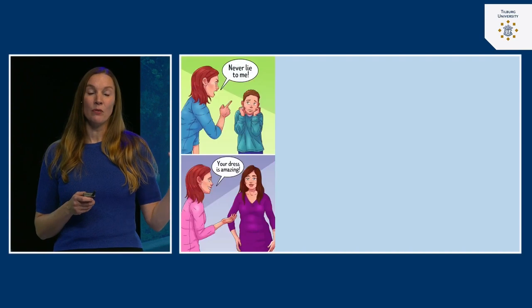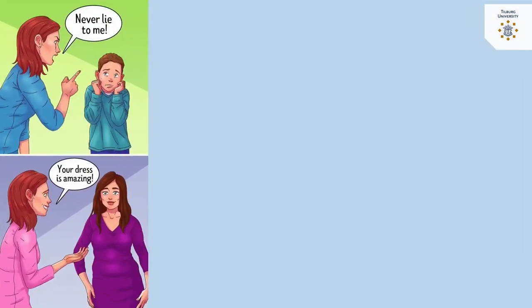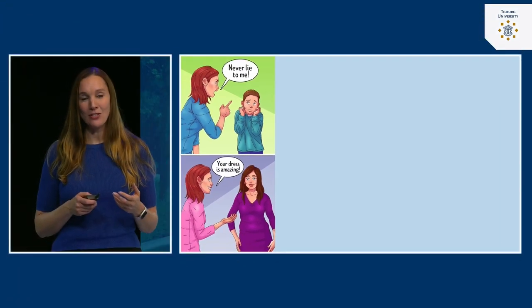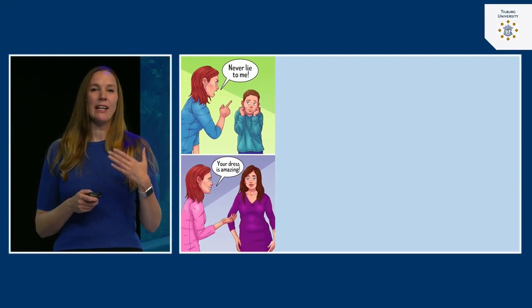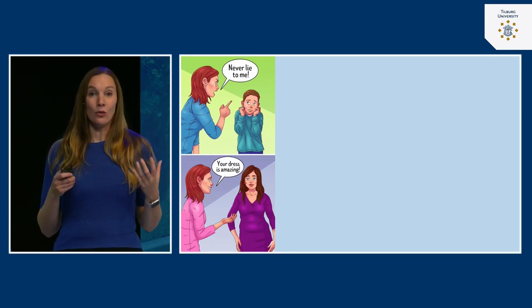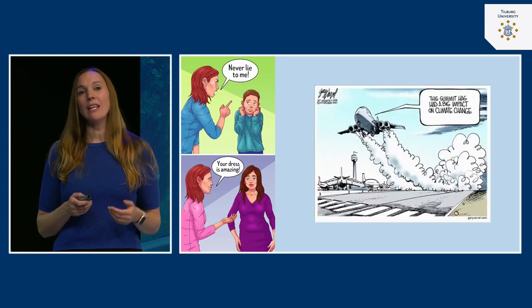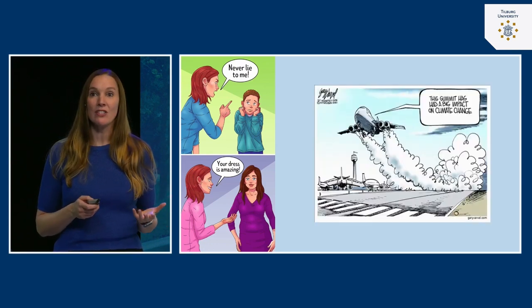You may for example value honesty a lot, but then find yourself telling someone else a lie. For example, I tell my kids all the time: don't lie, don't ever lie. And then I see a colleague wearing a new outfit and she asks me what I think of her new dress, and I say 'beautiful' — while I actually think otherwise. So I am behaving in a way that is not in line with my own core value, namely honesty.